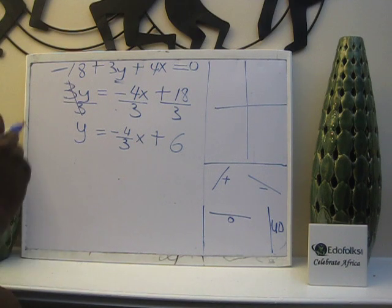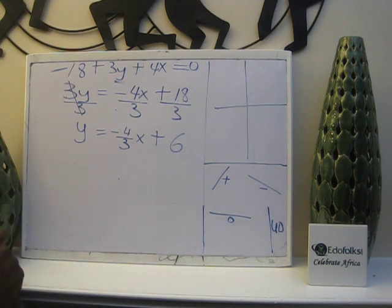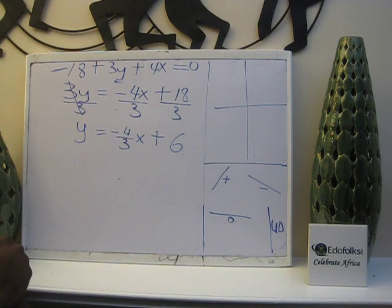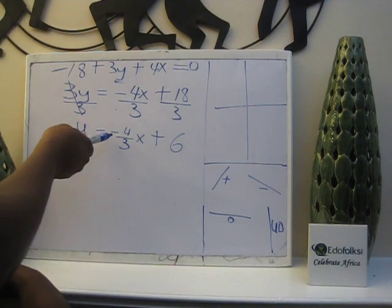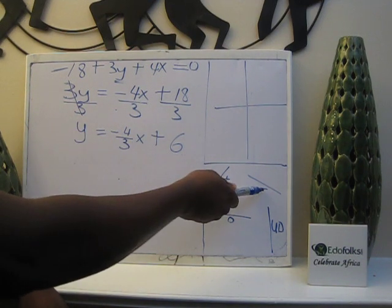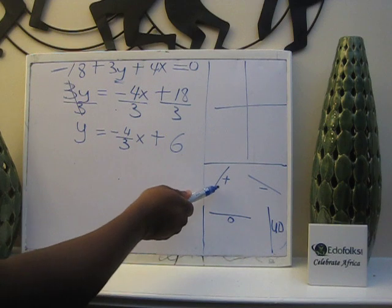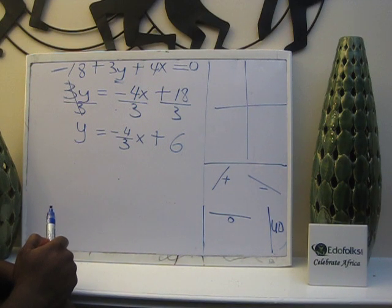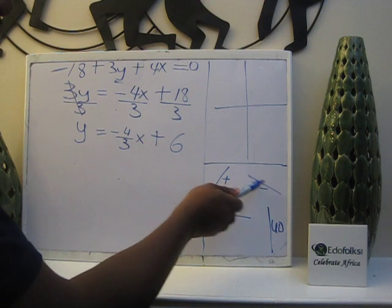So my y-intercept is plus 6. My slope is negative 4 over 3. So what kind of graph am I expecting? It's a negative slope. So I'm expecting this kind of graph. If it's a positive slope, it rises from left to right. If it's a negative slope, it slants from left to right.